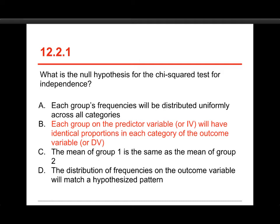Similarly, D could be the null hypothesis for the goodness of fit test if you have a particular different pattern other than uniform that you're expecting. C is the null hypothesis for the two-sample t-test.